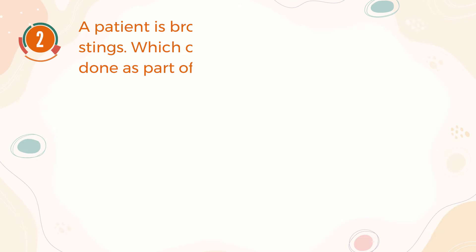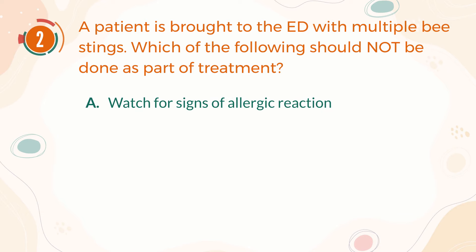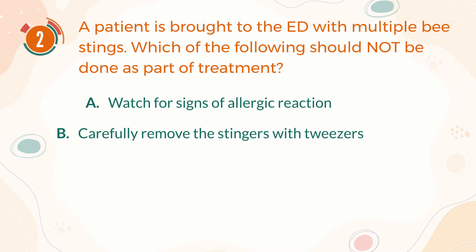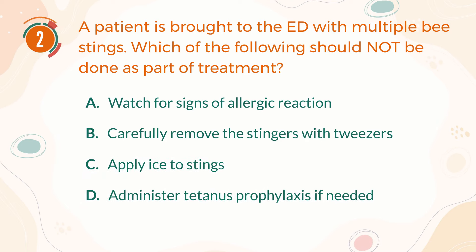Number 2. A patient is brought to the emergency department with multiple bee stings. Which of the following should not be done as part of treatment? A, watch for signs of allergic reaction. B, carefully remove the stingers with tweezers. C, apply ice to stings. D, administer tetanus prophylaxis if needed.